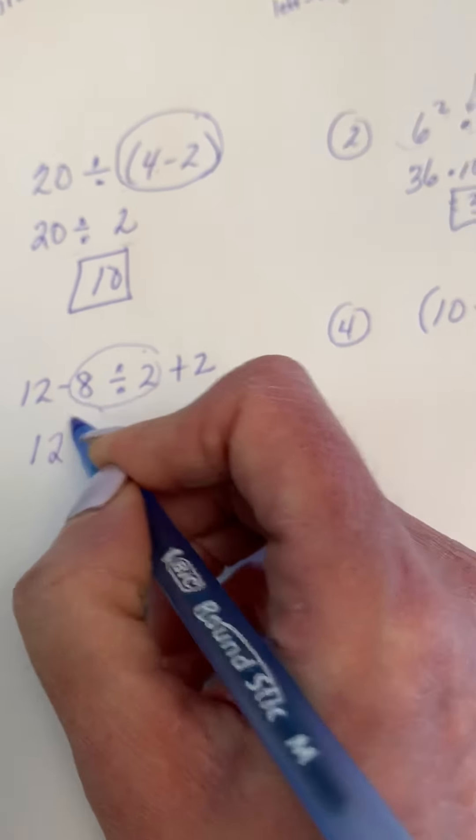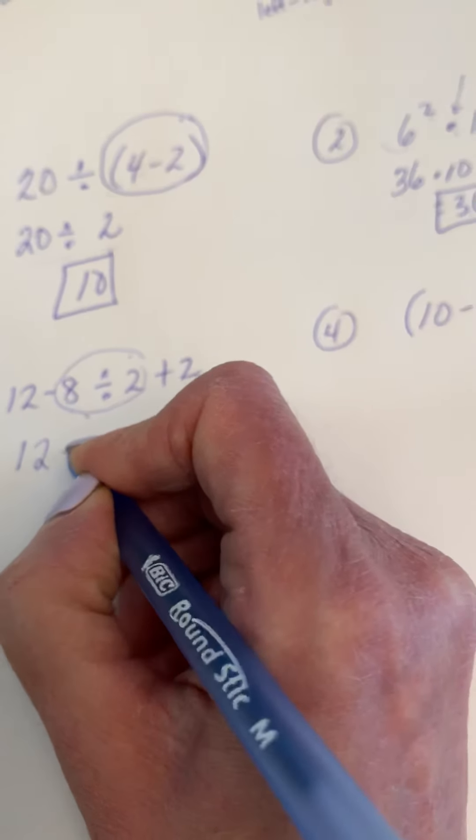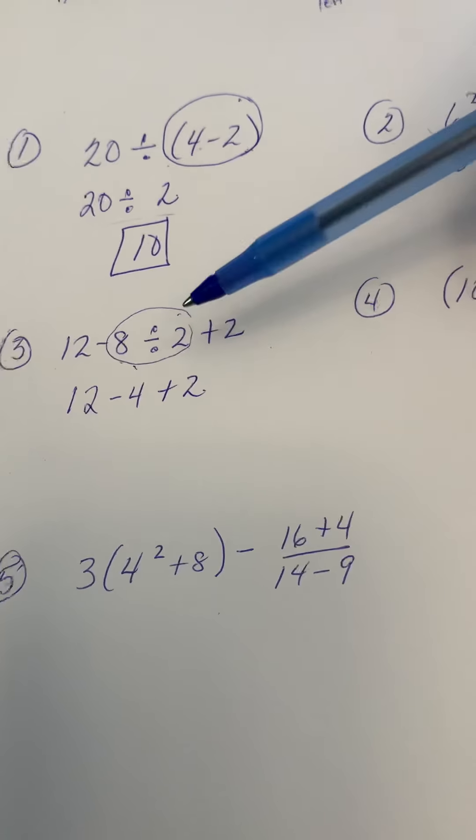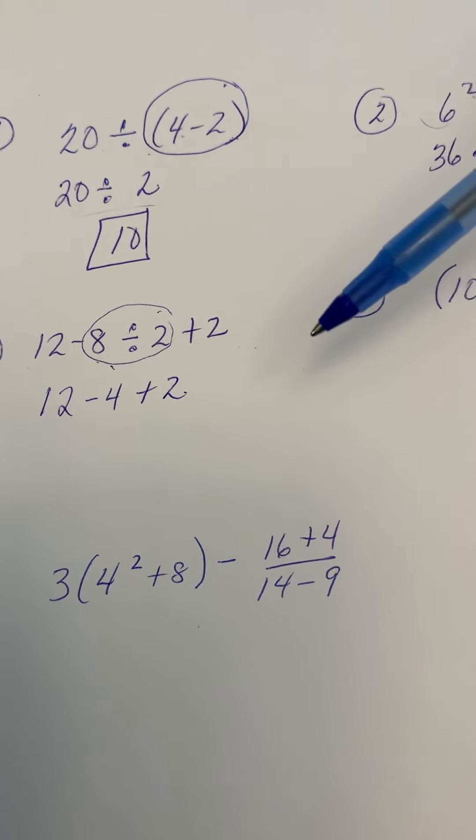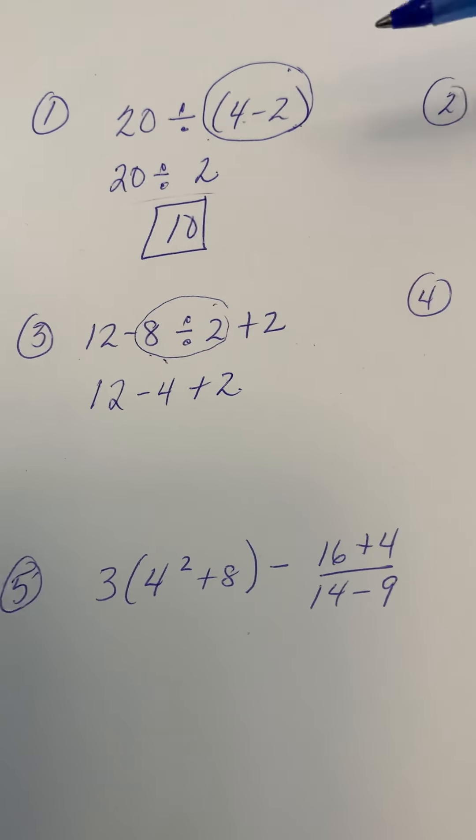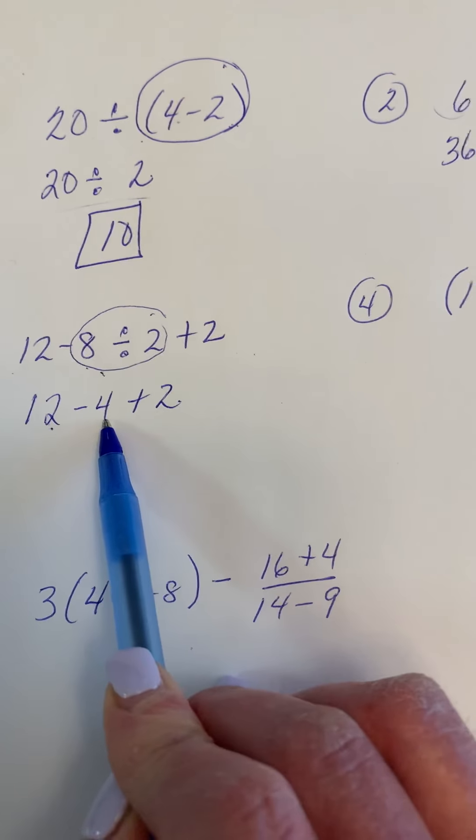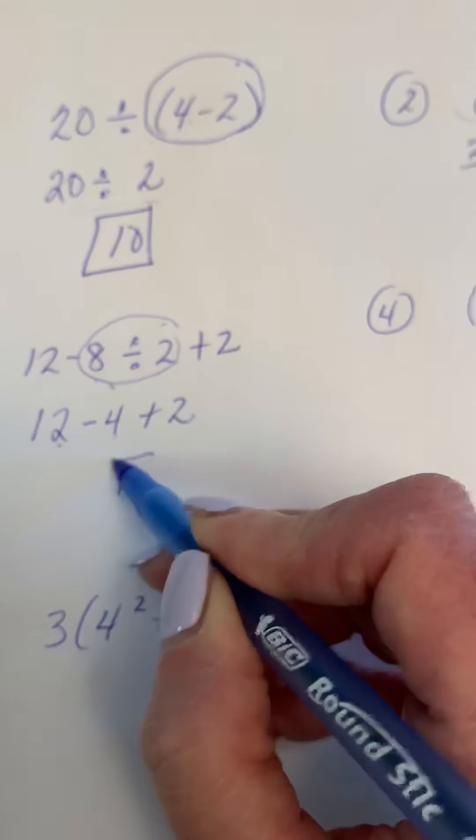So 12 and then 8 divided by 2 is 4, so minus 4 plus 2. And now we take a look back through, there's no division or multiplication left, so we'll move straight to the adding and subtracting, and you can just do it as it goes. 12 minus 4 is 8, and 8 plus 2 is 10.